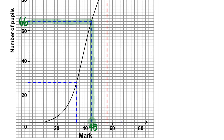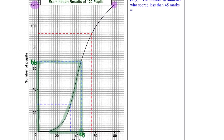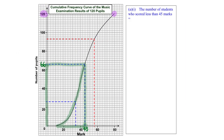Following the line, we reach 66. So there are 66 students who scored less than 45 marks. These are the students represented from 10 to 45 on the graph. We have successfully found the answer for part one: 66.